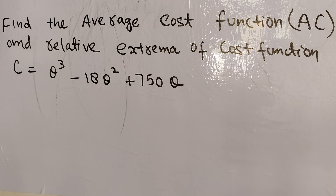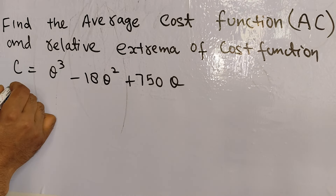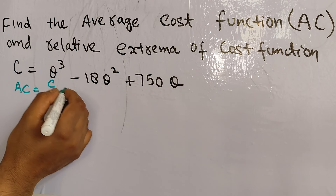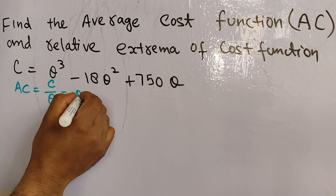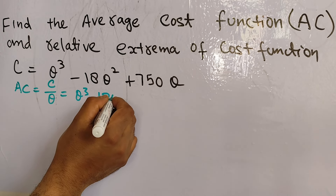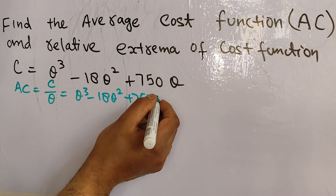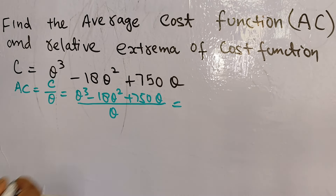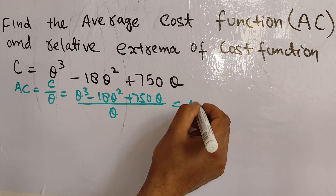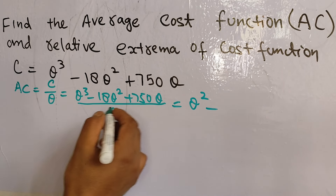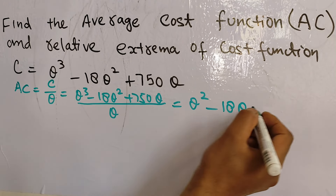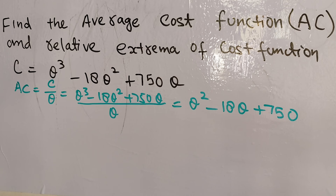First, we have to find the average cost. The average cost is simply total cost divided by output. So dividing this function by Q, we have Q cubed minus 18Q squared plus 750Q, then dividing by Q, we get the average cost: Q squared minus 18Q plus 750.